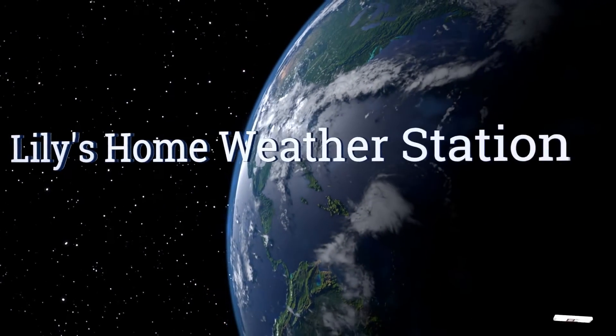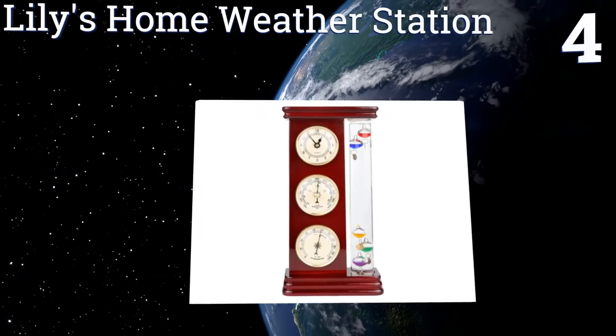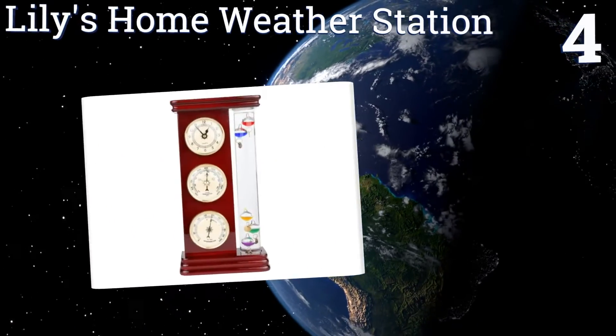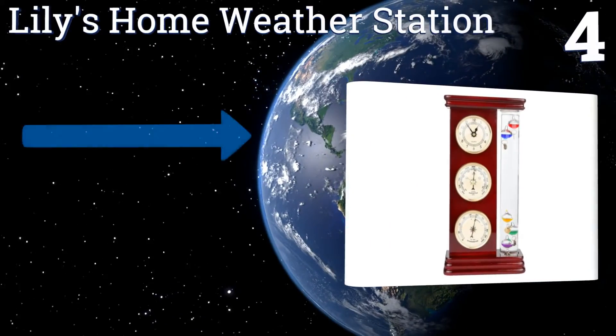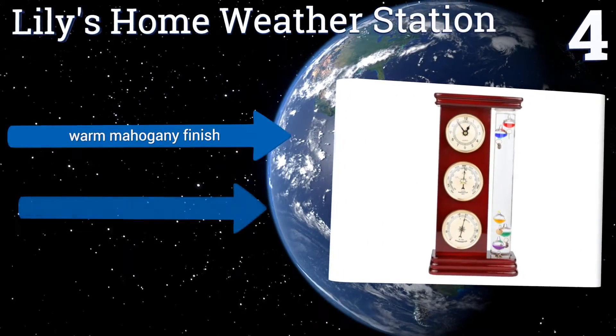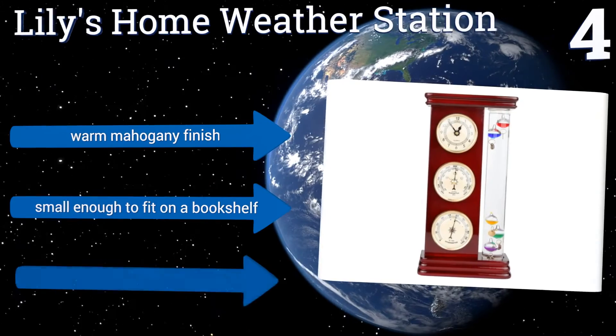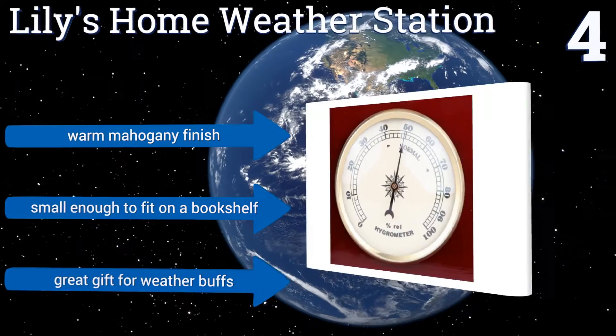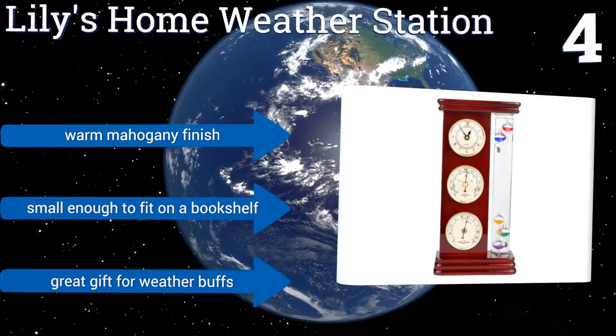Halfway up our list at number 4, giving you more information than most models on our list, the Lilly's Home Weather Station includes a precise quartz clock, a hygrometer to measure humidity levels, and a barometer to alert you to those days when it would be prudent to take along an umbrella. It comes in a warm mahogany finish, and is small enough to fit in a bookshelf. Makes a great gift for weather buffs.